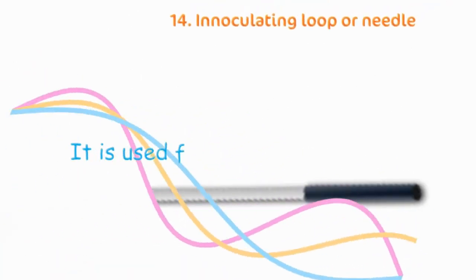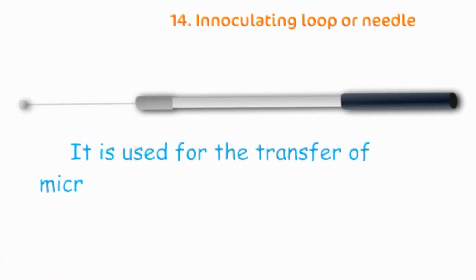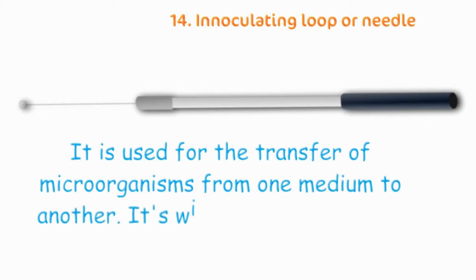Inoculating Loop or Needle. It is used for the transfer of microorganisms from one medium to another. Its wire is usually made up of nichrome wire.